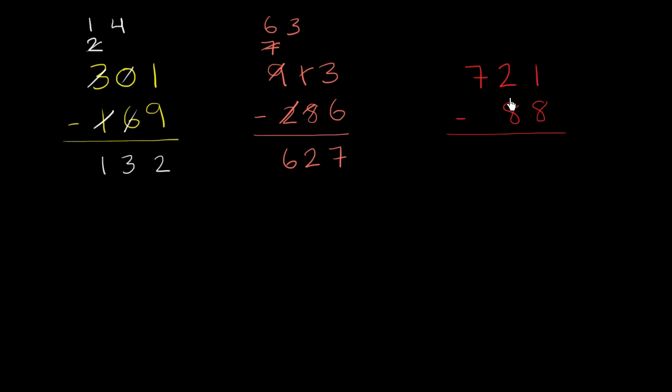Well, 12 minus 8 is 4, so 72 minus 8 is going to be 64. So now this is the same thing as 641 minus 8. Well, 41 minus 8 is going to be 33, I have to do a little bit of mental computation here, so this will result in 633.